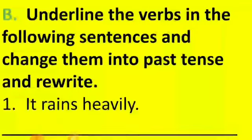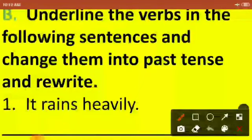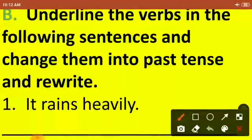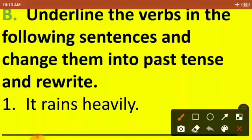Let us move ahead and see Activity B. Here we have to underline the verbs in the following sentences and change them into past tense and rewrite. What we have to do: read the sentence carefully, identify and underline the verb, then change that verb into past tense, and write the full sentence again using the past tense form of that verb.